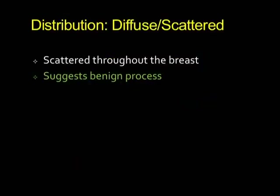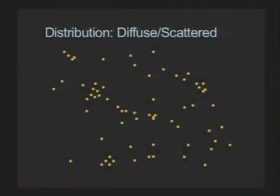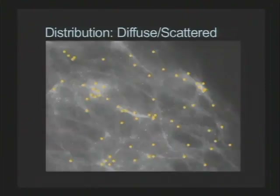Diffuse calcifications are scattered throughout the breast and suggest a benign process. Diffuse doesn't mean evenly distributed — they randomly cluster — but the key is that no cluster looks very different from any other cluster. They all look very similar.